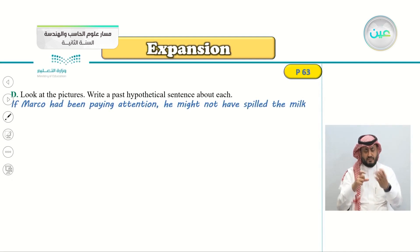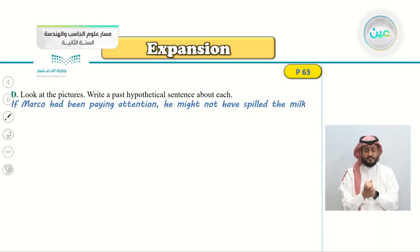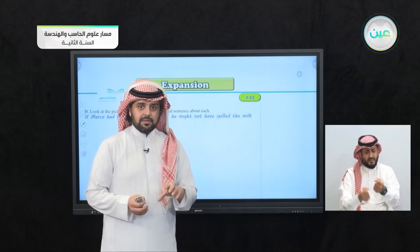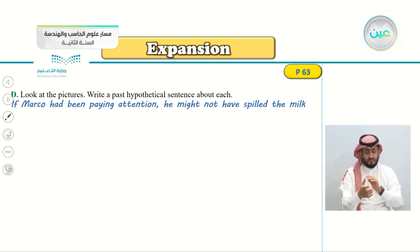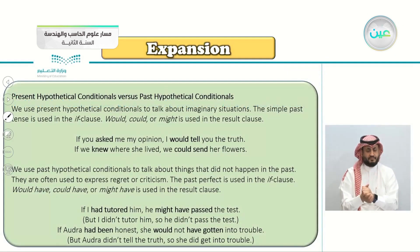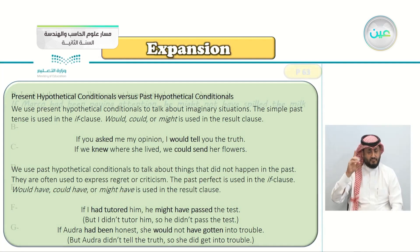Exercise D: look at the pictures on page 63 and write a past hypothetical sentence about each. For example, the example given is: 'If Marco had been paying attention, he might not have spilled the milk.' Remember, the past hypothetical conditional is used for things that did not happen. In the if-clause, use the past perfect; in the result clause, use would've, could've, or might have.